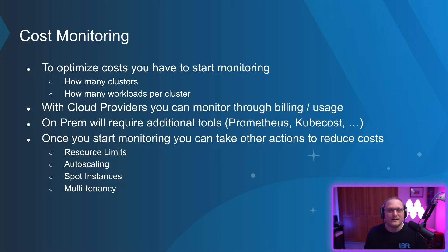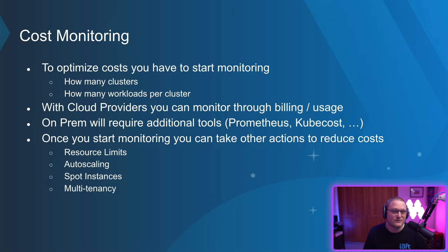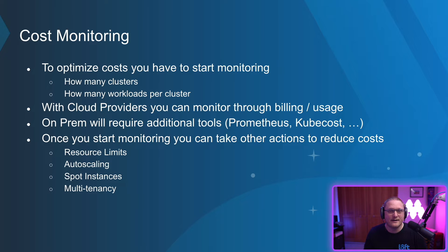On-prem, it may require some additional tooling like Prometheus or Kubecost. Some of the things you can start doing after you're monitoring to reduce costs are resource limits, auto scaling, spot instances, and multi-tenancy. We're going to get into some of those and talk about them real quick.